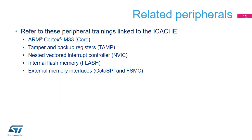This is a list of peripherals related to the iCache. Please refer to these peripheral trainings for more information if needed: ARM Cortex-M33, tamper and backup registers, nested vectored interrupt controller, internal flash memory, external memory interfaces, OctoSPI, and FSMC.